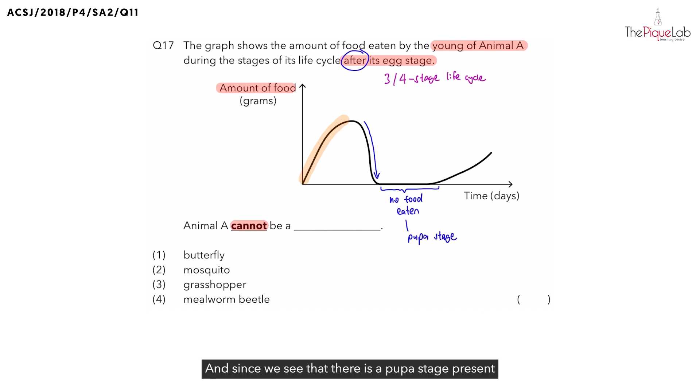And since we see that there is a pupa stage present for animal A, this tells us that animal A must have a four-stage life cycle. So now that we have determined that, we are ready to take a look at the options.